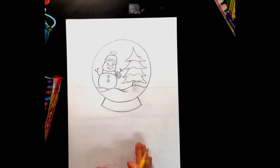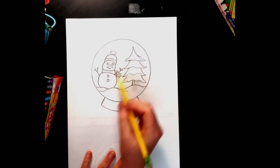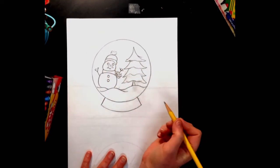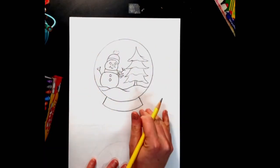So those are the details I decided to add for inside my snow globe. I'm also going to color it and add lots of snow falling in the background to make it look really nice. But this is the end of step one.